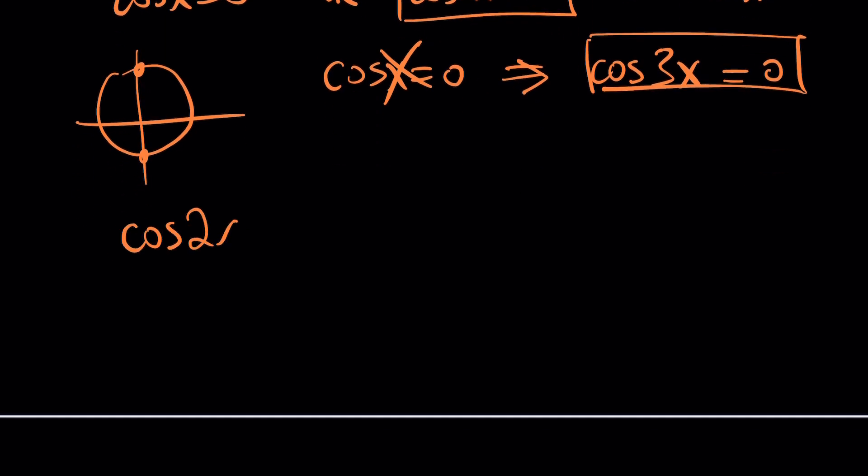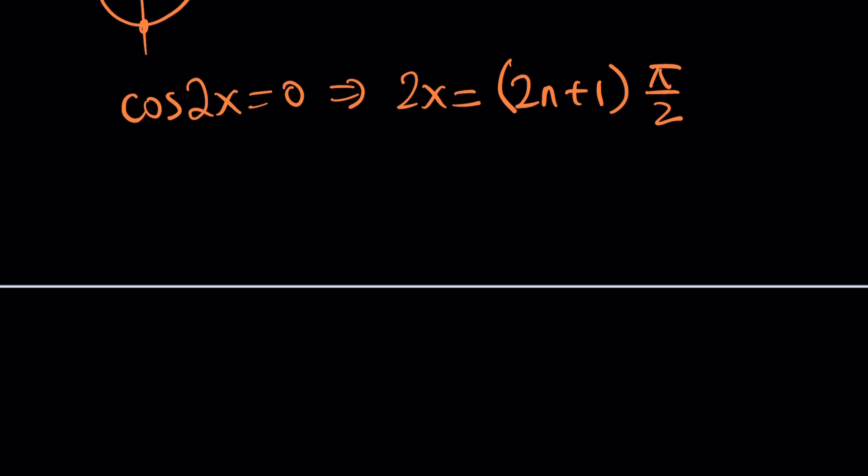So here's what we need to do. If cosine of 2x equals 0, then we can write 2x as the odd multiples, so we can write it as 2n plus 1, multiply by pi over 2. This covers all the possibilities. Then you divide everything by 2, x will be 2n plus 1, multiply by pi over 4. In other words, odd multiples of pi over 4: 1 pi over 4, 3 pi over 4, 5 pi over 4, 7 pi over 4, you name it, they're all going to be solutions.